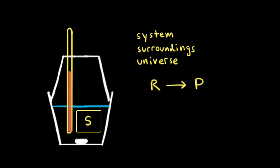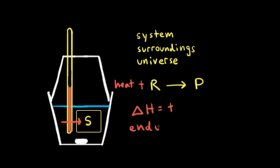Finally, let's think about an endothermic reaction. In an endothermic reaction, heat is transferred from the surroundings to the system. Since energy is leaving the surroundings, the temperature of the water will decrease for an endothermic reaction. Since heat is being transferred to the system, we can write heat on the reactant side. Delta H would be positive for an endothermic reaction — energy is transferred from the surroundings to the system, and therefore the temperature of the water will decrease.